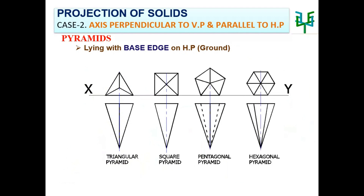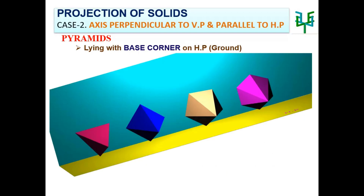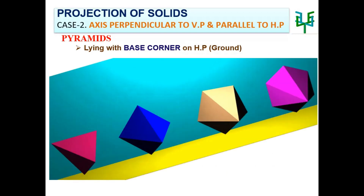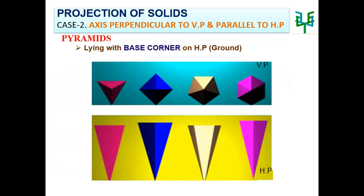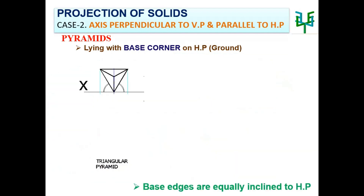A pyramid resting on the ground with its base corner: while resting with its base corner, two base edges can be equally inclined to HP or the XY line. Example: Triangular pyramid.